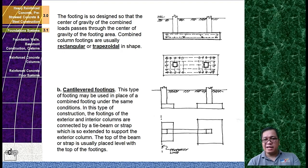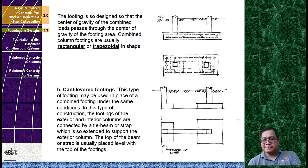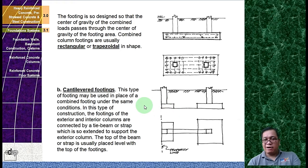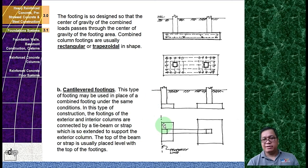You also have cantilevered footings. This type of footing is used in place of a combined footing under the same conditions. The footings of the exterior and interior columns are connected by a tie beam or strap which supports the exterior column. The top of the beam or strap is usually placed level with the top of the footings. This is common when, for example, there is a firewall — your footing must be designed so that you won't cross the property line. Always remember that when doing construction, you must never encroach even an inch onto the adjoining property.